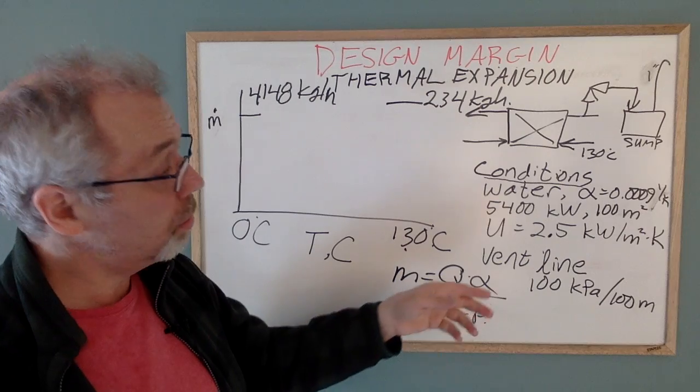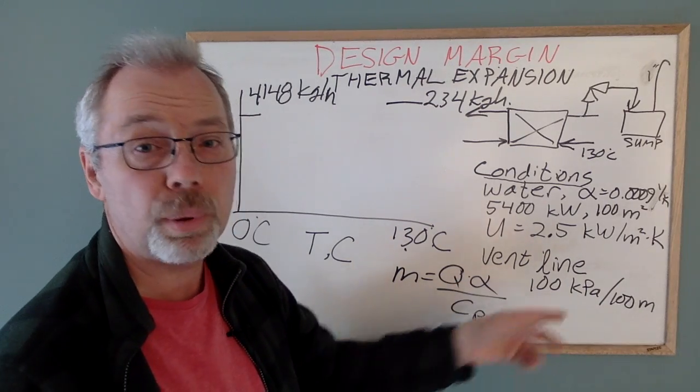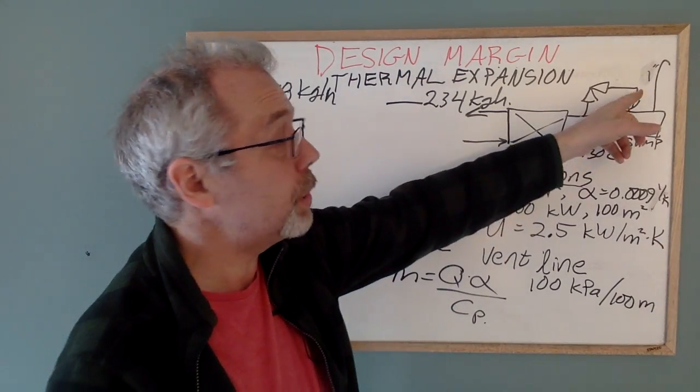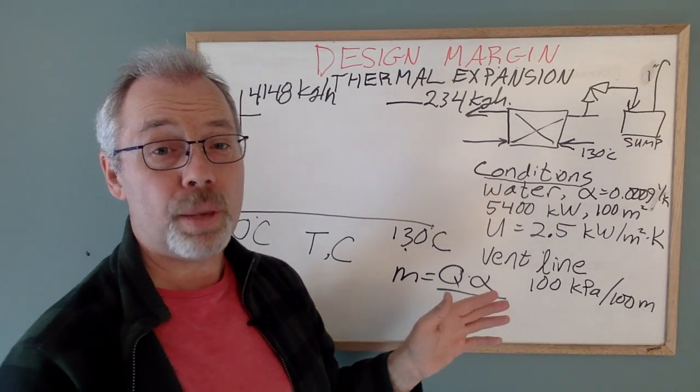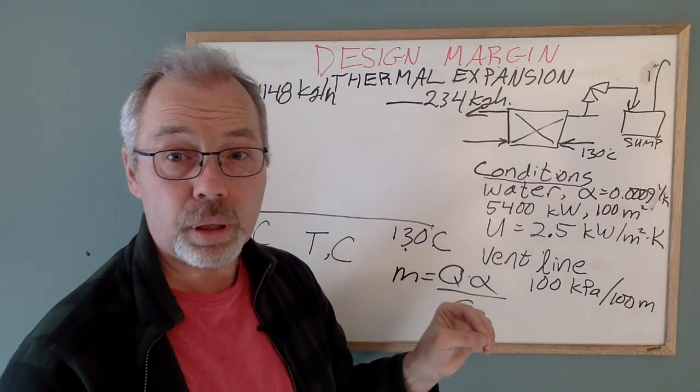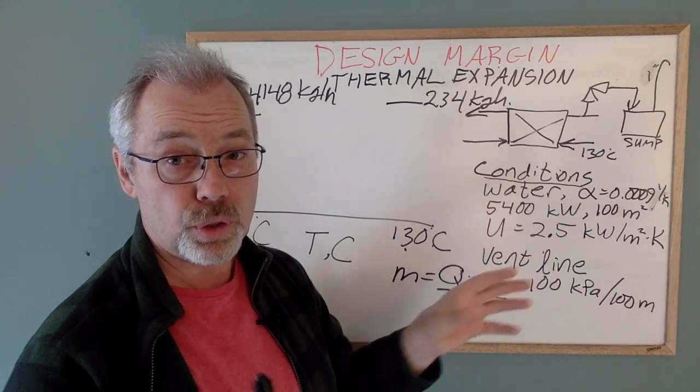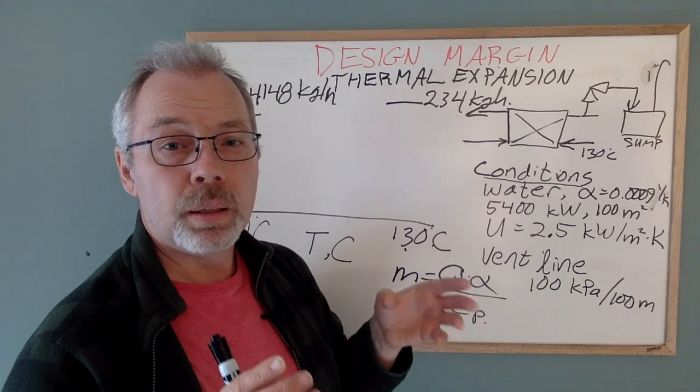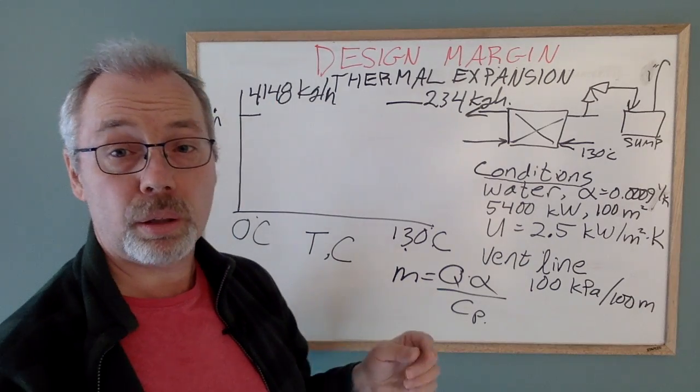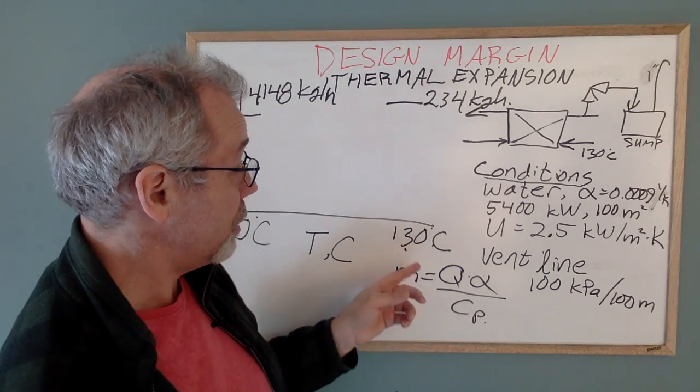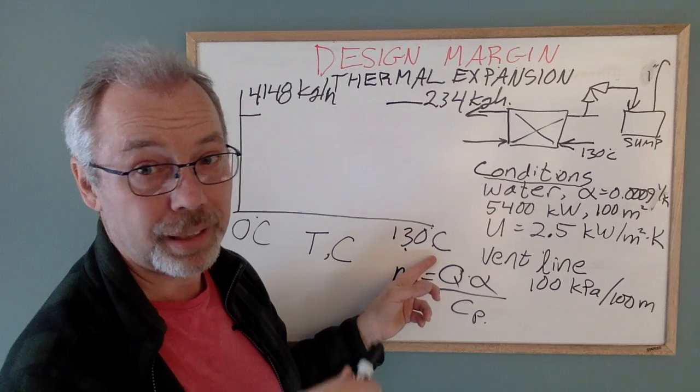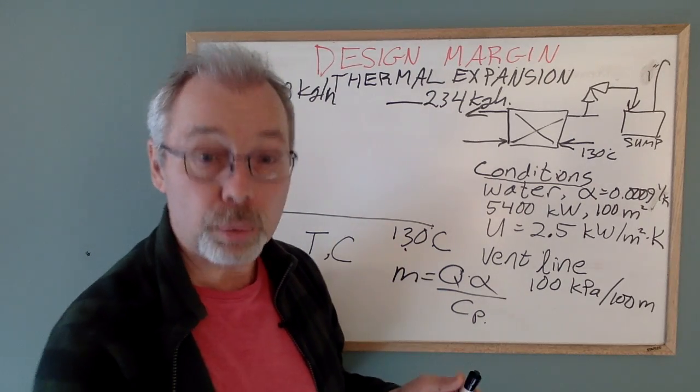Now, with our design criteria for hydraulics being 100 kPa per 100 meters, this means we need an inch and a half vent line. Our existing one inch line is too small. Now, this is where we need to step back and say, hold on, take a minute. This would require us to tie our PSV into the flare line with the construction risks associated with it. Is it possible to have the full relieving rate of over 4,000 kilograms an hour simultaneous with the highest temperature of 130 degrees Celsius? And the answer to that question is no. We need to look at this a little more carefully.